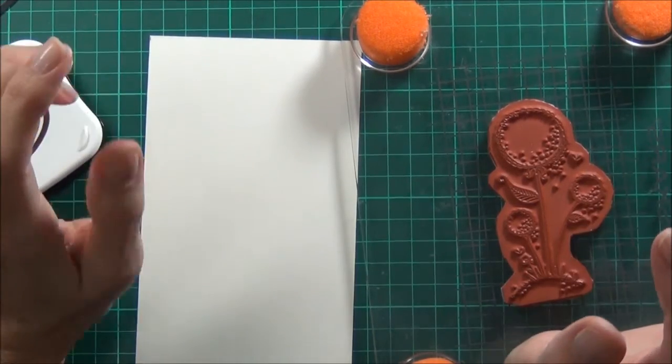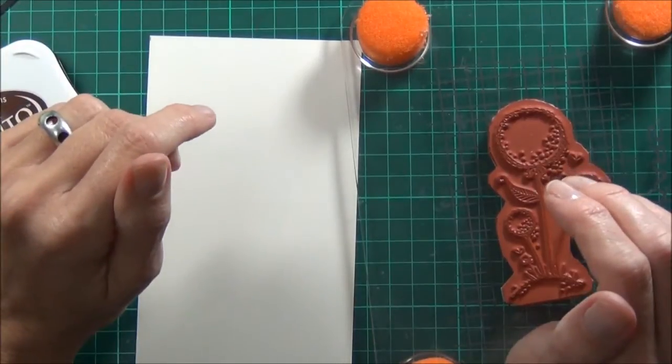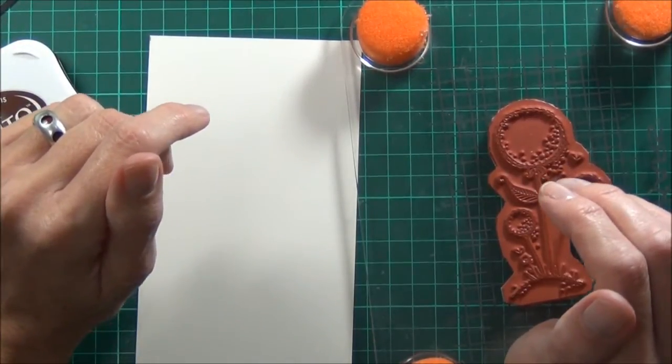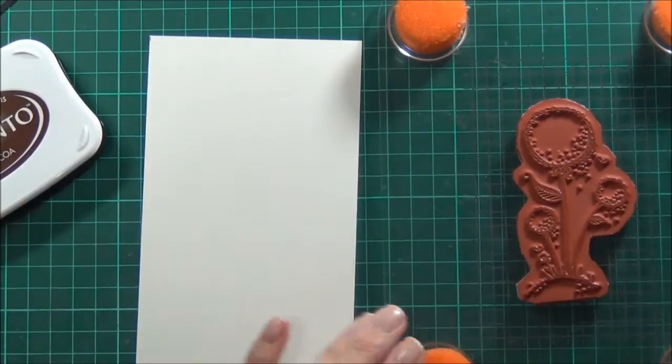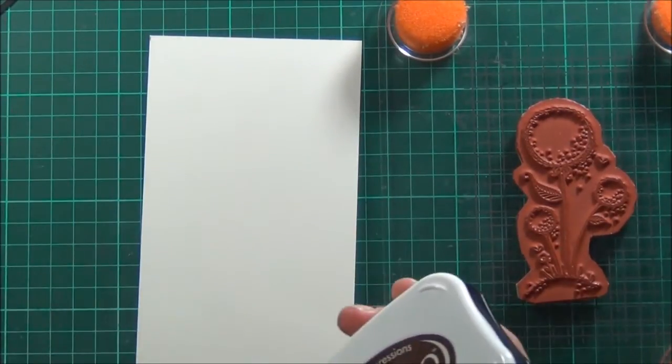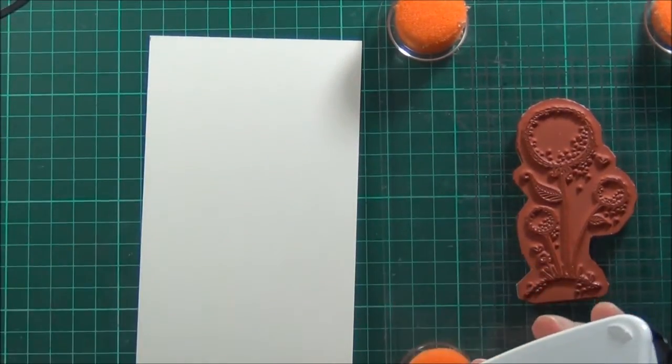Hi, it's Therese from Lost in Paper. I'm back with another coloring video for Purple Onion Designs, and today I've got this sweet little stamp from Stacey Yacula called Sunny Blooms.